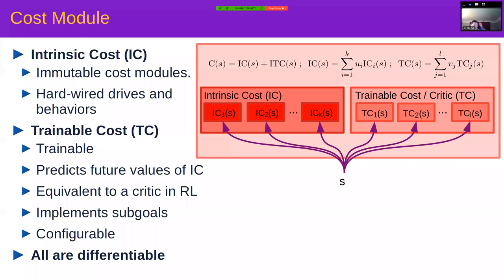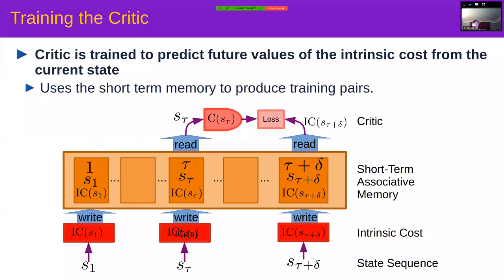The cost module has two submodules. The intrinsic cost is composed of multiple engineered submodules driving the system toward particular tasks or guaranteeing certain conditions — for example, when the battery is low, the system must find a plug to recharge. The trainable critic uses short-term memory to recover traces of previous states and future costs, training itself to predict future costs from current states. You can train the critic to predict not just one future intrinsic cost but some weighted combination of future costs.